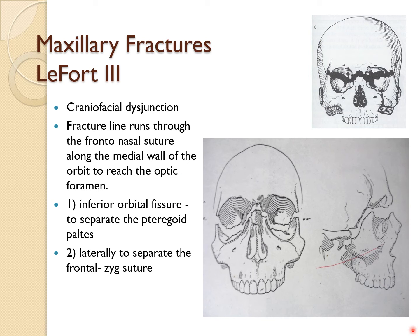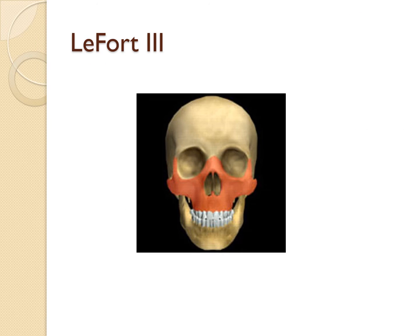Le Fort 3 is the craniofacial disjunction. The fracture line starts through the frontonasal suture, along the medial wall of the orbit, and goes to the optic foramen. Beyond the optic foramen it traverses the orbital fissure to separate the pterygoid plates, then laterally to separate from the frontozygomatic suture, going down to the frontozygomatic suture. These are the main areas of fracture — there will also be involvement of the zygomatic bone.